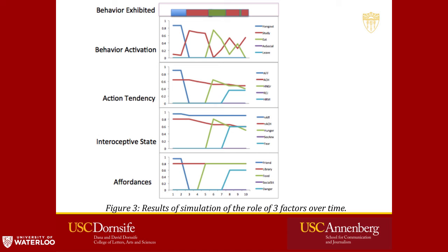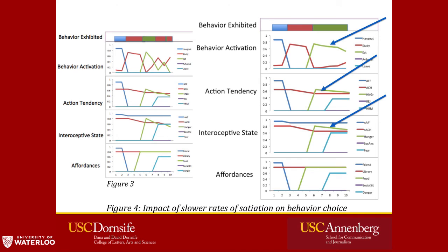Here's an example varying the satiation rate for hunger. In the first case, the interoceptive state for hunger goes down fairly quickly, so the action tendency for eating drops below that for studying, and the person eats for a while then goes back to studying. With a slower satiation rate, the interoceptive state doesn't go down fast, so the person continues eating and never goes back to studying — showing how individual differences in satiation rate affect behavior.